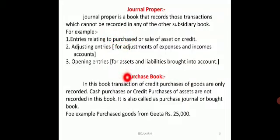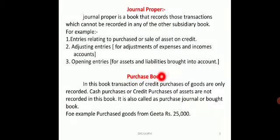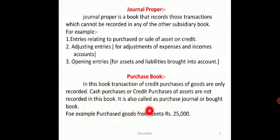The next subsidiary book is the purchase book. Purchase book is a book which records credit purchases of goods. Cash purchases or credit purchases of assets are not recorded in this book. Only goods which we are dealing in, purchased on credit basis, are recorded in the purchase book. For example, if a transaction says 'goods purchased from Gita' with no cash mentioned, it is assumed to be a credit purchase and recorded in the purchase book.